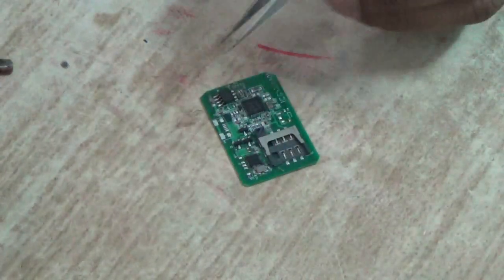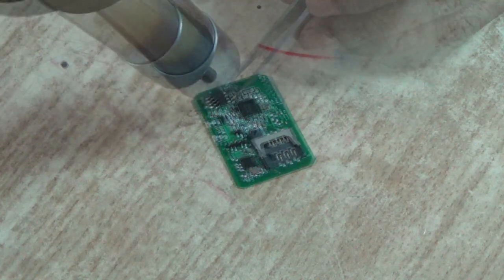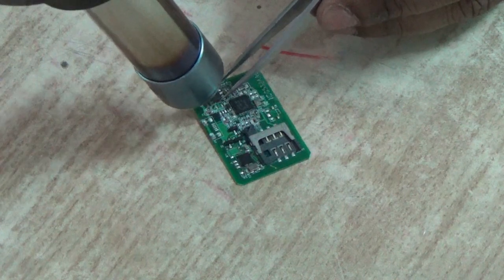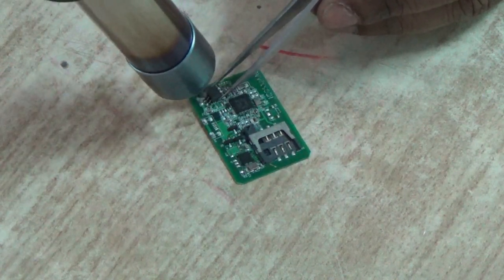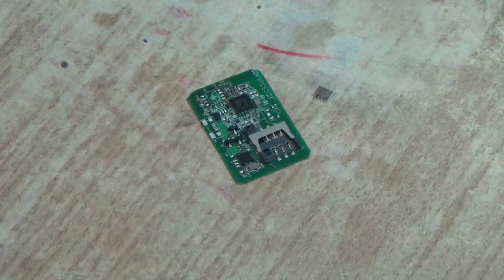This is my SMT debug board. I am going to desolder that IC. So blow the hot air around it and quickly you can remove it from the PCB like this.